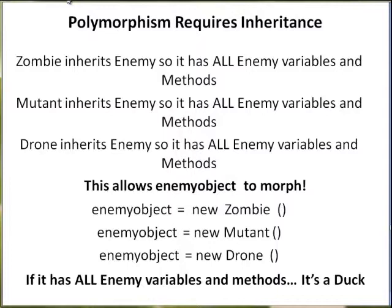Polymorphism requires inheritance. Zombie inherits enemy, so it has all of enemy's variables and methods. Mutant inherits enemy, so it has all of enemy's variables and methods. Drone inherits enemy, so it has all the enemy variables and methods. This allows the variable enemy object, which is of type enemy, to morph. I can say enemy object equals new zombie and that object will behave like a zombie. Enemy object equals new mutant and it behaves like a mutant. Enemy object equals new drone and all of a sudden it is behaving like a drone. If it has all of enemy's variables and all of enemy's methods — it's a duck. No, excuse me, it's an enemy.